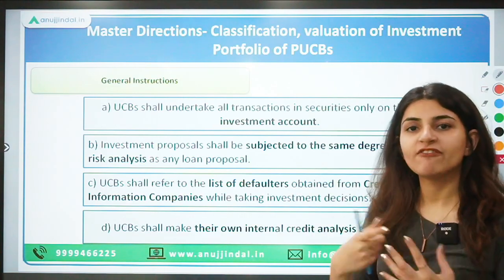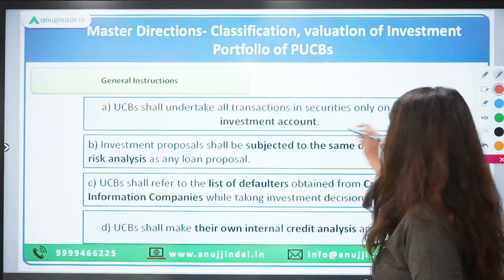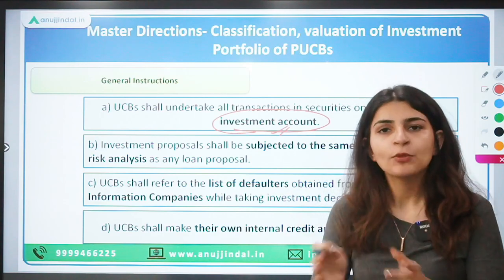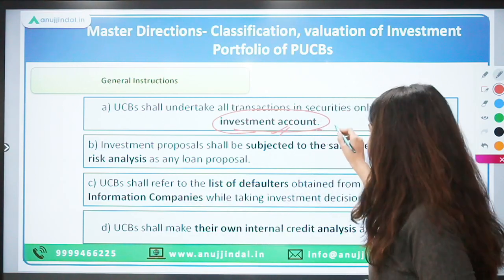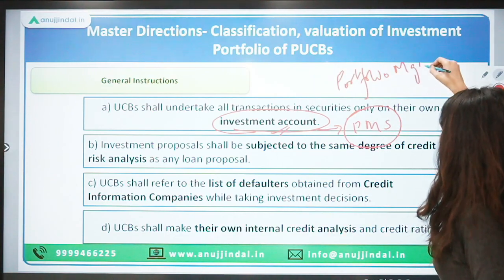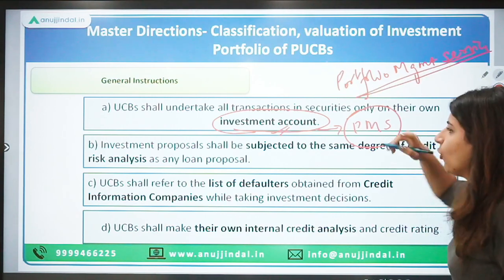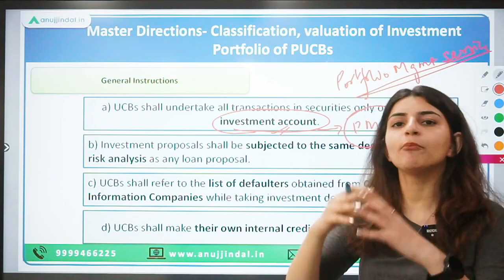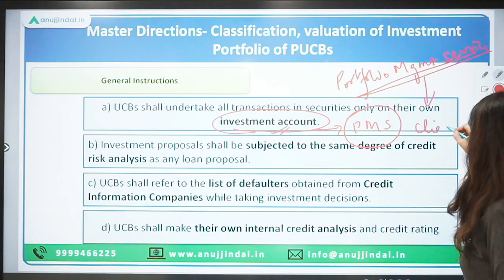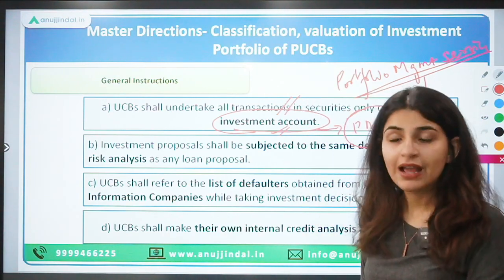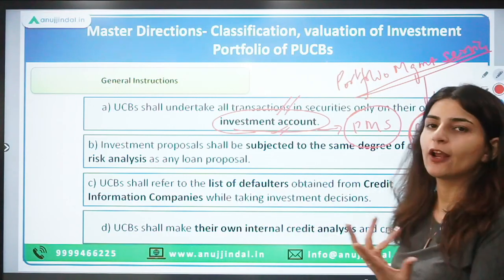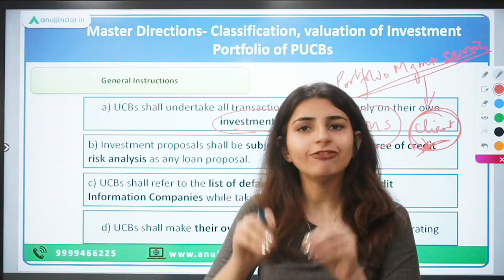Whenever UCBs make investment transactions, these must be done in their own investment account — that is, on their own behalf and not on behalf of any portfolio management service provider or their clients. Portfolio management service providers maintain portfolios for various institutions and individuals, but UCBs cannot make transactions in any fiduciary capacity on behalf of those clients.